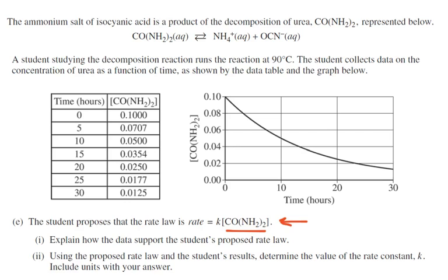So explain how the data supports this. So why does this support that this is a first order rate law? Well, the little key piece of this you're supposed to know is that first order reactions have a constant half-life. So we can say this guy here is 0.1, half of that is 0.05, and that took 10 hours.